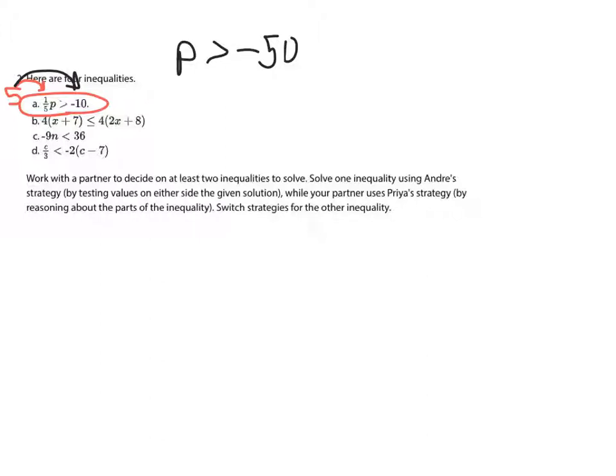If I plug that into the original equation, one-fifth of negative 100, one-fifth of x will be less than not greater than negative 10. This means the solution must include positive numbers. So the solution must be greater than negative 50, which is what we solved for it.